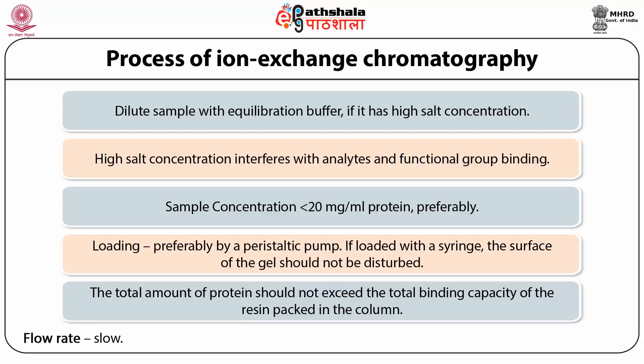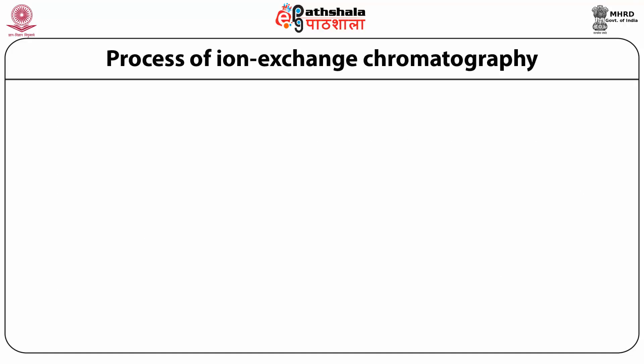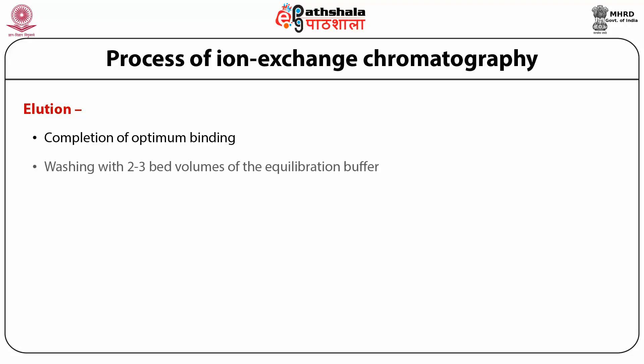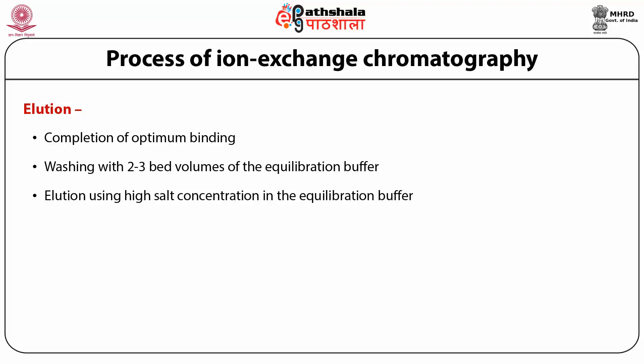The flow rate should be slow when loading the column as it helps better binding. Washing of the column and elution of bound proteins can be done at a comparatively higher flow rate. Once optimum binding has been achieved, the column must be washed with 2 to 3 bed volumes of equilibration buffer to completely remove unbound contaminants. Bound proteins can then be eluted using high salt concentration — either by a gradient of 0.1 molar to 0.5 molar NaCl, or by stepwise elution using 0.1, then 0.3, then 0.5 molar NaCl.